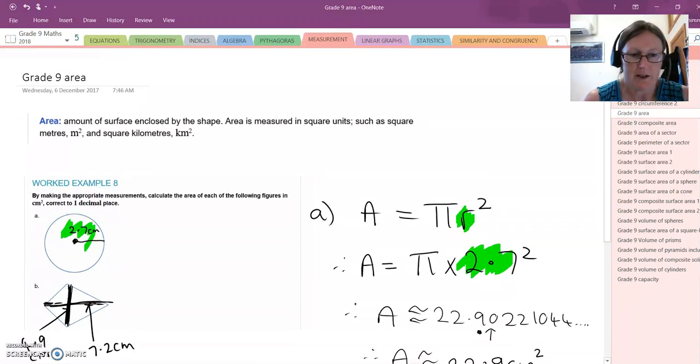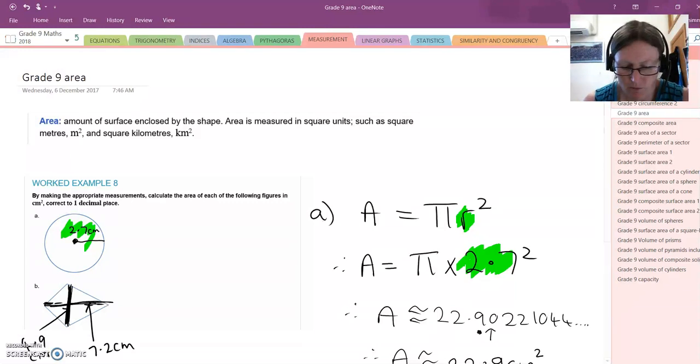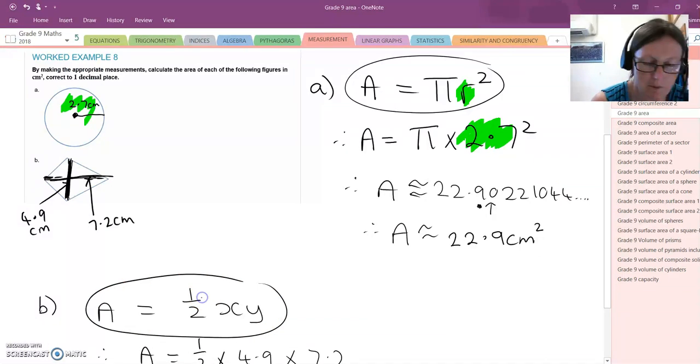So just a reminder, area is the amount of surface enclosed by the shape. Remember the units of centimetres squared, millimetres squared, kilometres squared, whatever is appropriate there. And identify what the shape is. Once we've identified the shape, we then put in the appropriate formula for the shape. And then it's a matter of substituting in the values for the measurements.